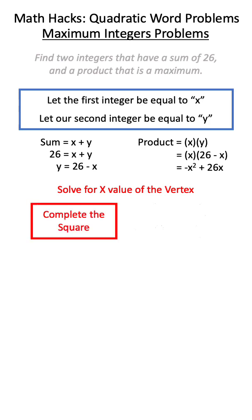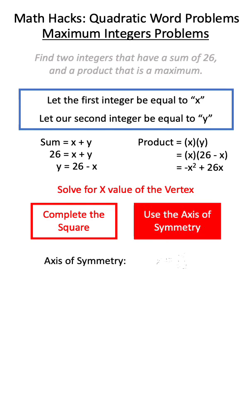We can do this through completing the square or through using the axis of symmetry. Let's choose to use the axis of symmetry. The axis of symmetry is equal to x equals negative b over 2a, which we can solve to be 13.